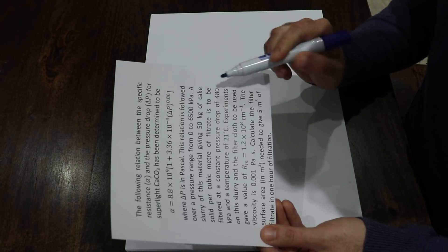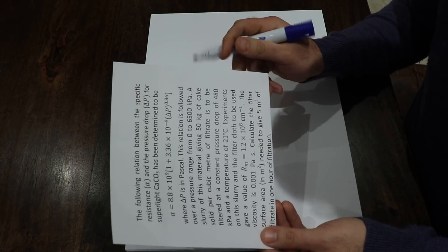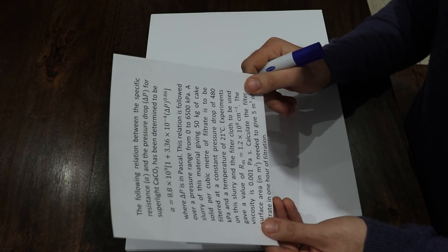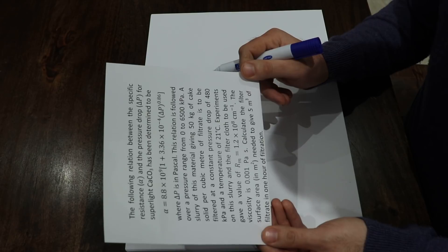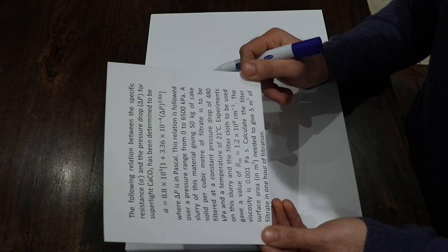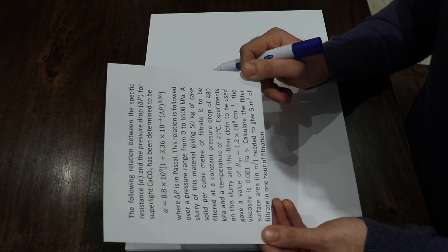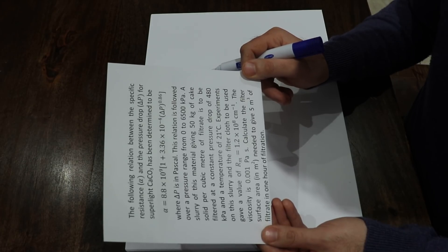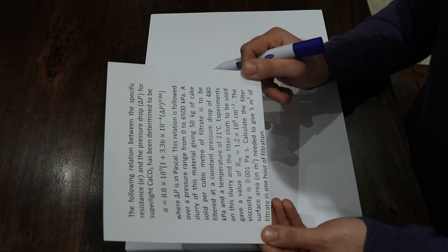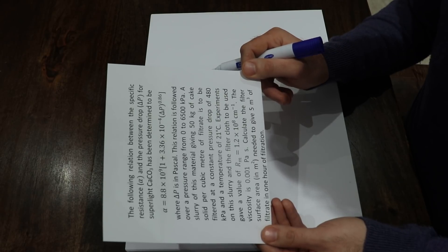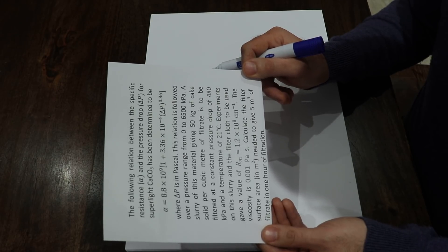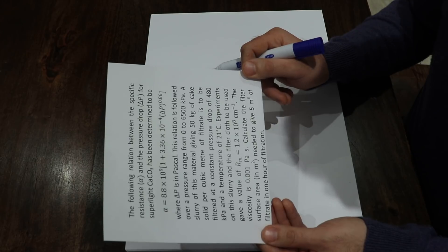Experiments on this slurry and the filter cloth to be used gave a value of RM equal to 1.2 times 10 to the power of 8 per centimeter. The viscosity is 10 to the minus 3 Pascal second. Calculate the filter surface area in square meters needed to give 5 cubic meters of filtrate in one hour of filtration.